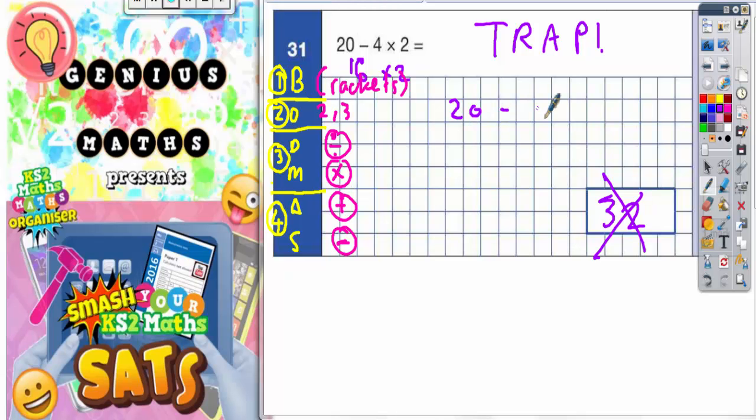We've got a subtract and a multiply here. Well, if you check the list of BODMAS, subtract is down here and multiply is up here. Because multiply is higher on the list, we need to do that first. So we need to do 4 times 2 first.